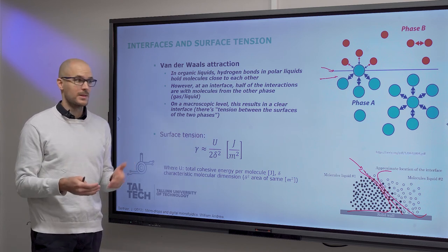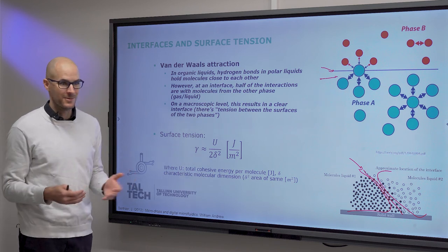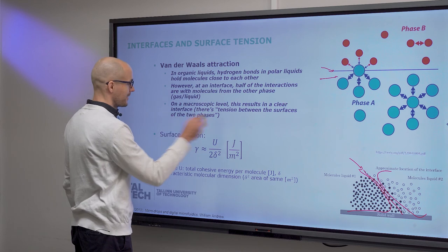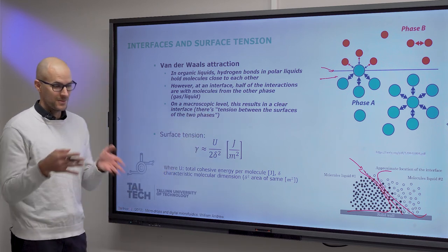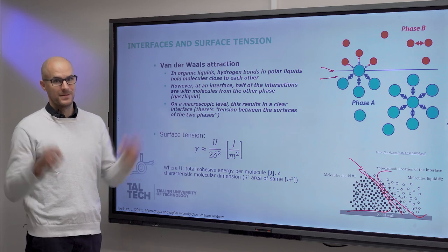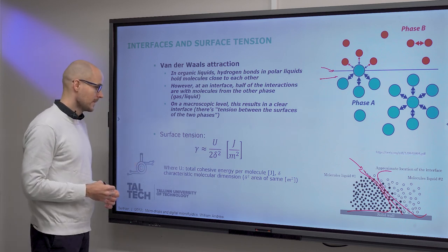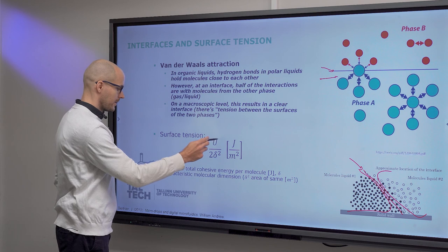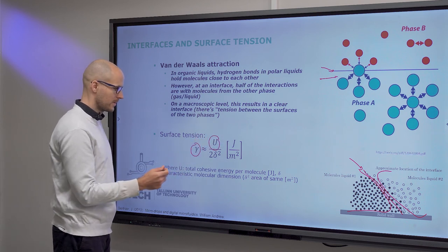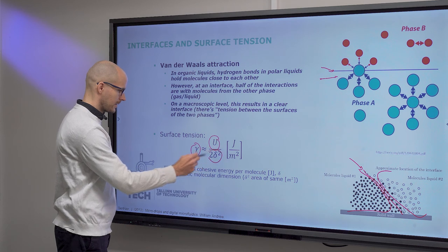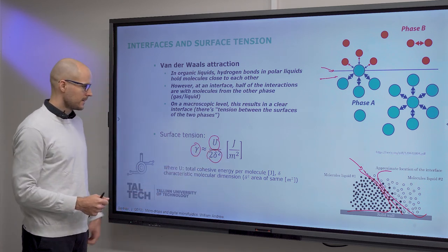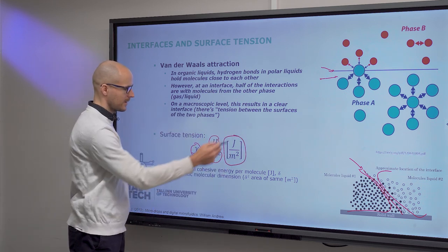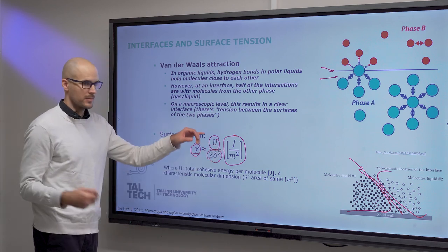On the microscopic or nanometric level, you will see the molecules crossing the interface. However, when you just look at it from a macroscopic level, you will see a clear dividing line. What holds the molecules in a certain liquid together is the Van der Waals attraction. In organic liquids, hydrogen bonds in polar liquids hold the molecules together. However, at the interface, half of the interactions are with the molecules from the other phase. This is how we can express surface tension, from the total cohesive energy per molecule and the characteristic molecular dimension.